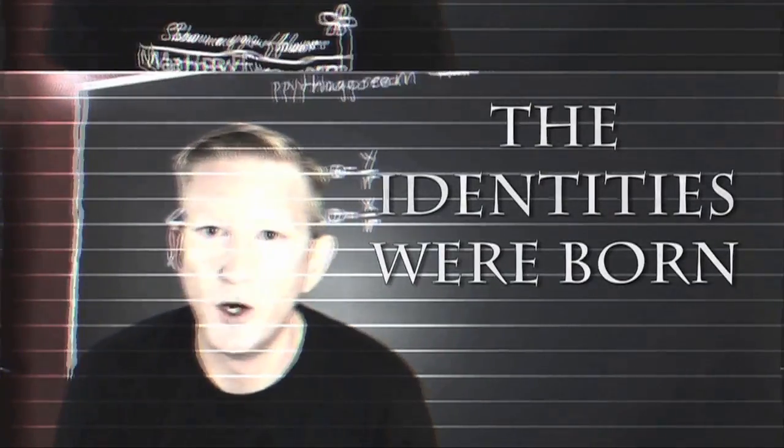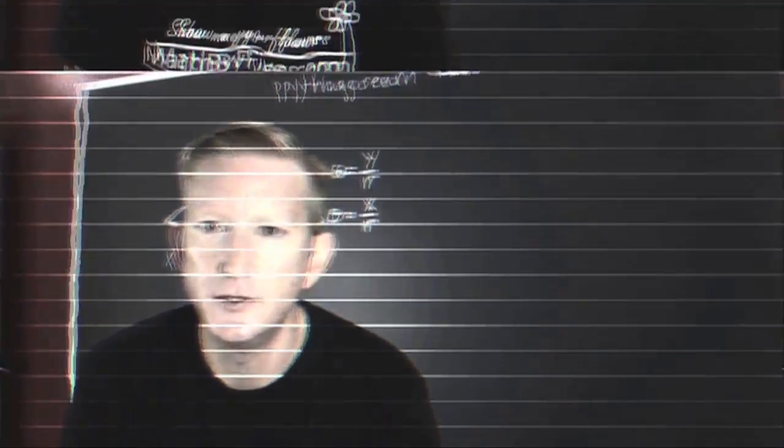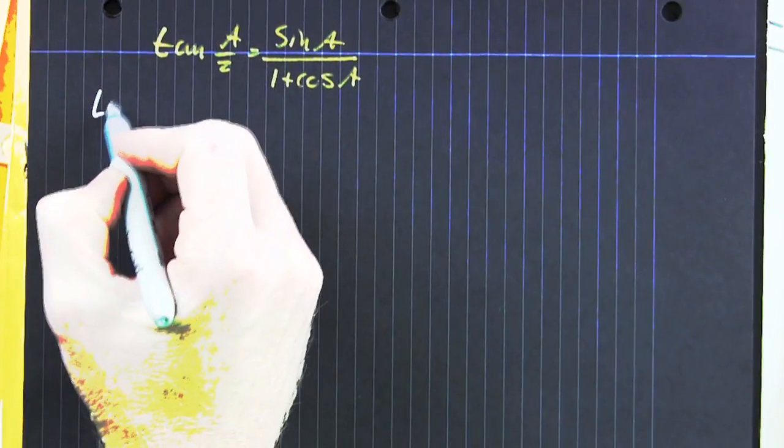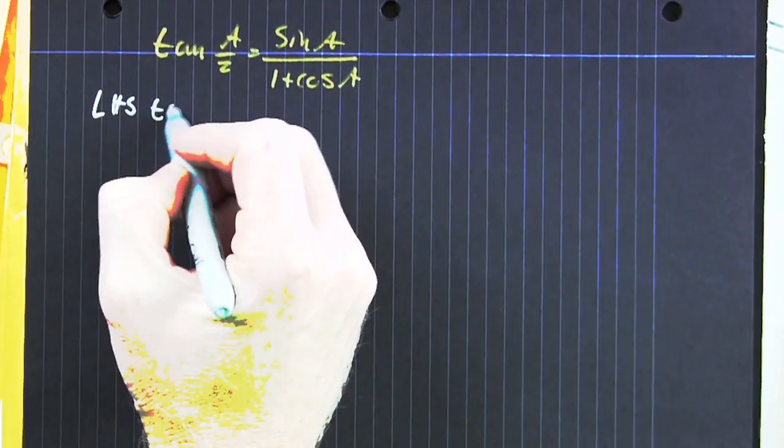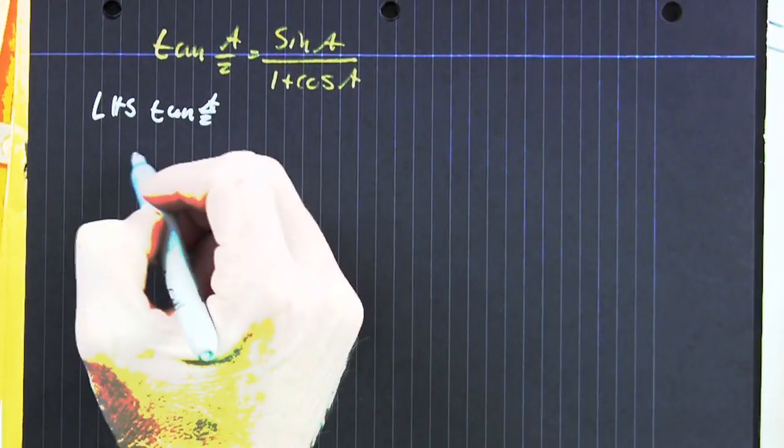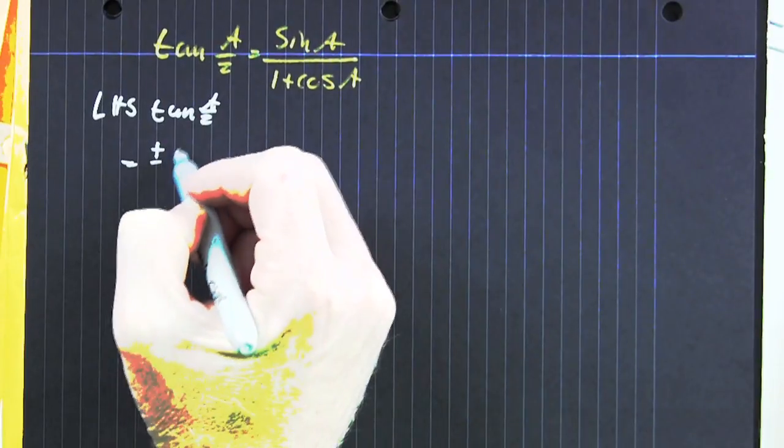And this is where the identities were born. Let's go. Prove the tangent of a over 2 is the sine of a over the quantity 1 plus cosine a.